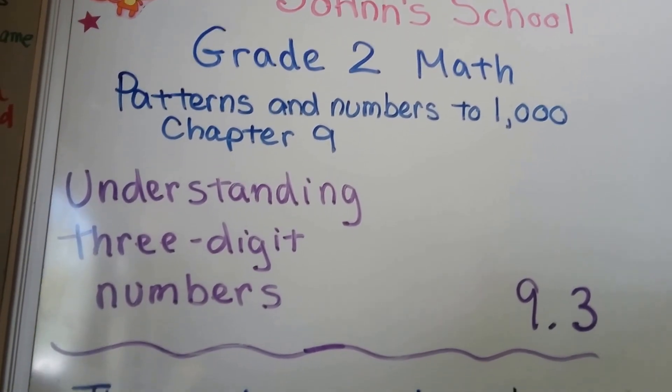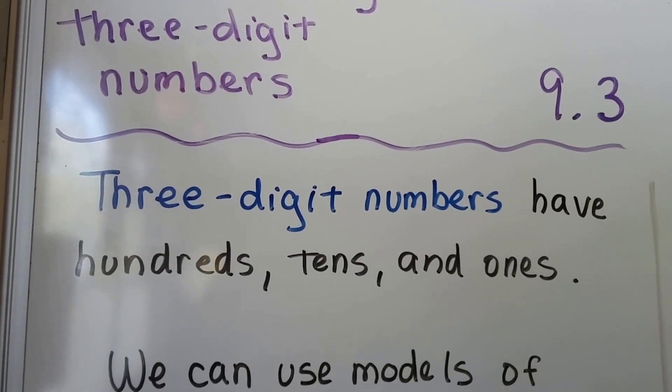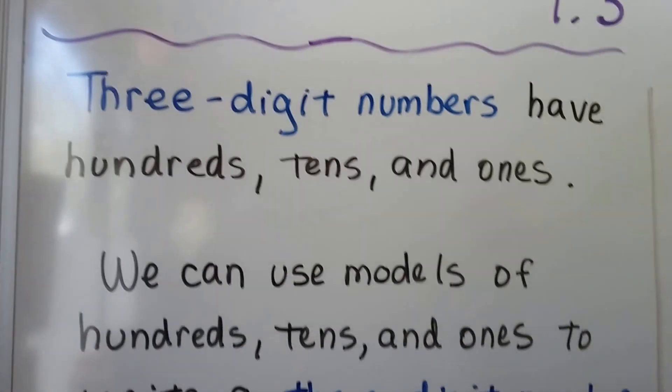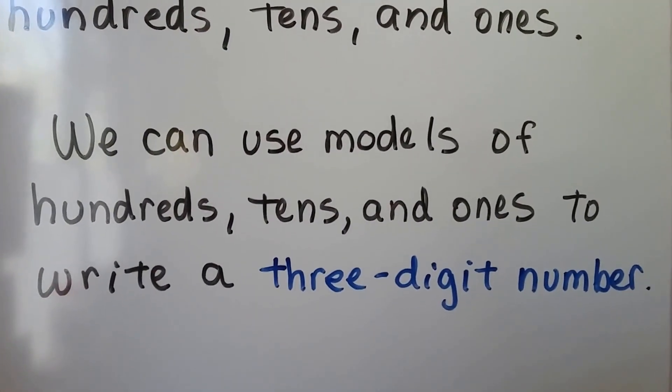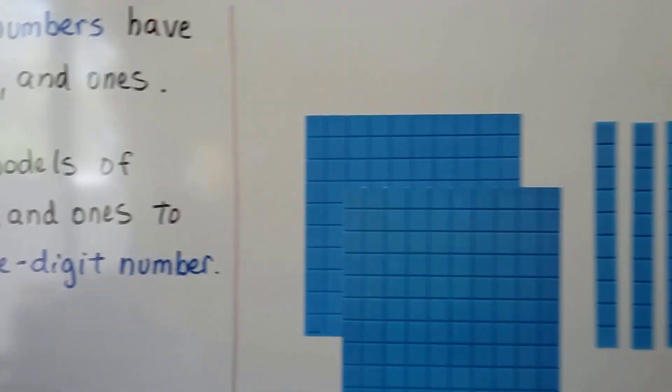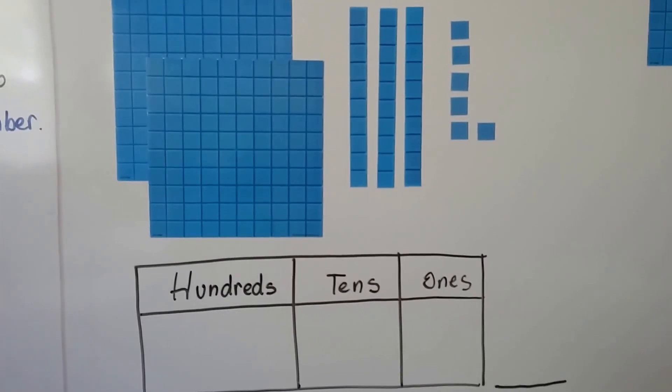Understanding three-digit numbers, lesson 9.3. Three-digit numbers have hundreds, tens, and ones. We can use models of hundreds, tens, and ones to write a three-digit number. Let's take a look at this first one. We know the big squares are hundreds.